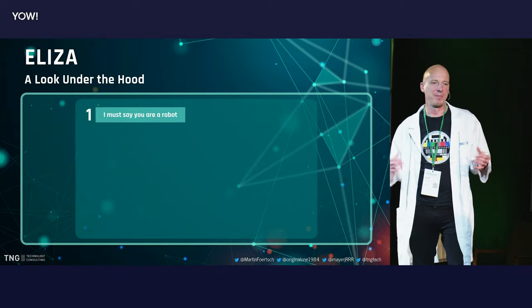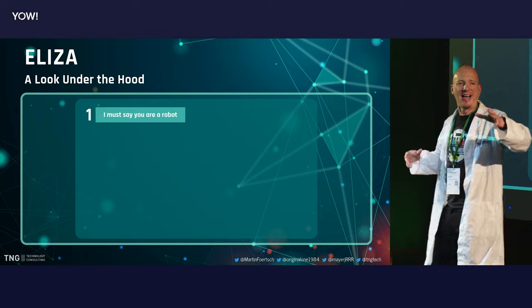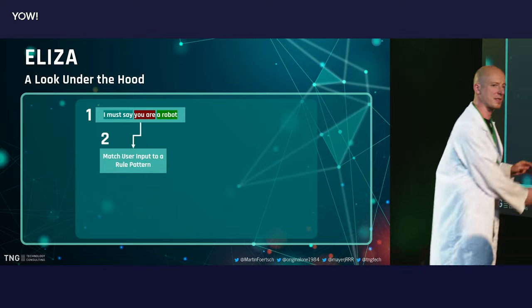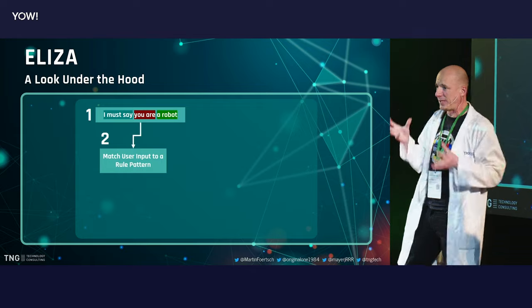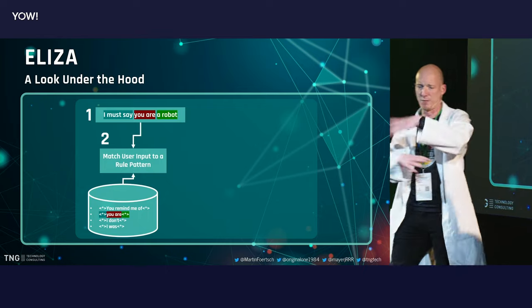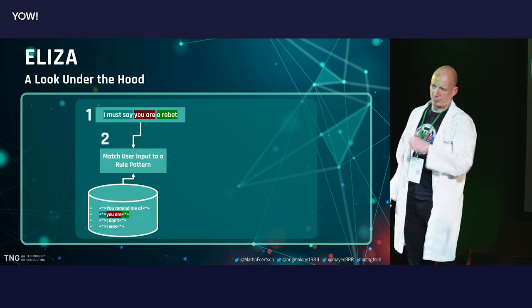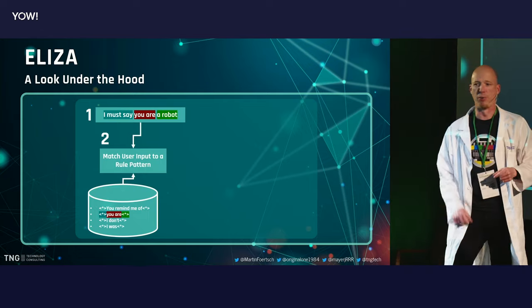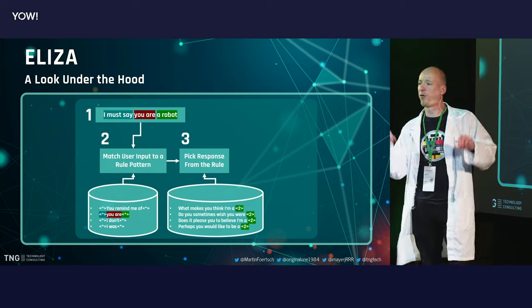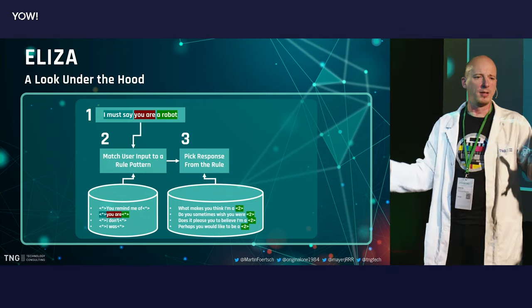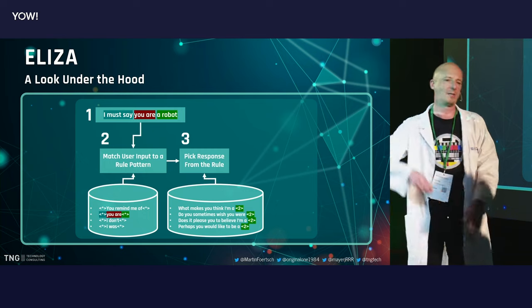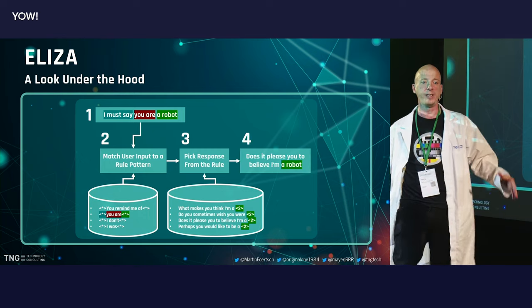So how does Eliza actually work? Let's take the example sentence 'I must say you are a robot' as input. Step two: we do some pattern matching — we match the user input to a rule pattern. We have an array of rules. We look for something like 'you are blah blah blah,' which matches our input. Then we pick a response for this specific rule, such as 'What makes you think that I'm a robot?' or 'Do you sometimes wish you were a robot?' And the output becomes 'Does it please you to believe I'm a robot?'